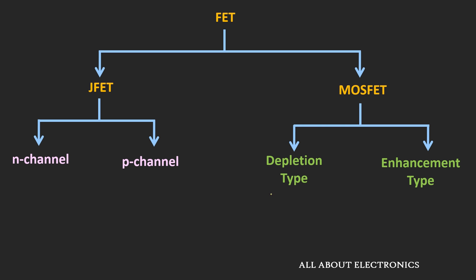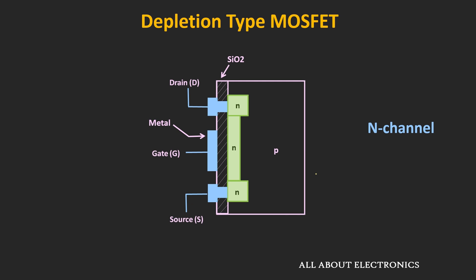In this video, we will learn about the depletion type of MOSFET. First of all, let us see its construction. In the N-channel depletion type of MOSFET, the channel is made up of N-type material and the substrate is P-type material. Through the metallic contacts, the drain and the source terminals are connected to this N-channel.